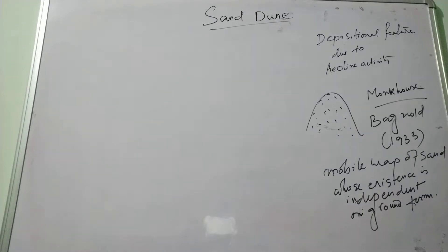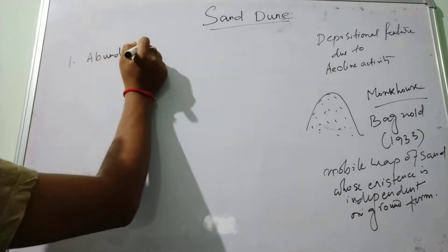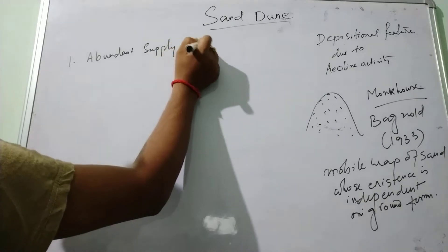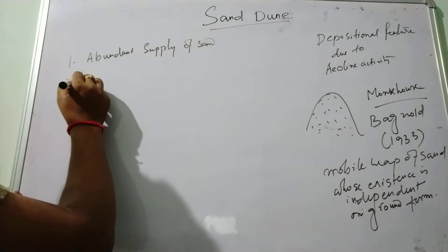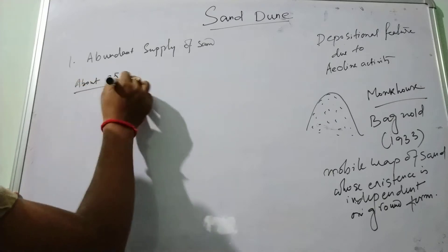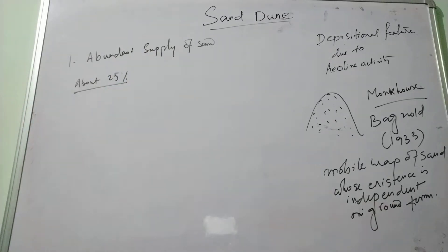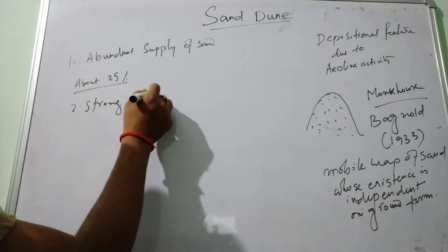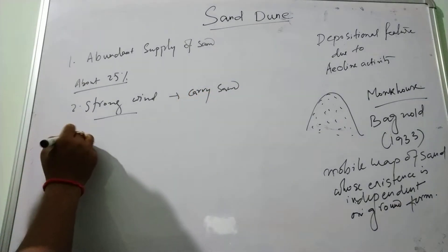There are several factors that influence the formation of sand dunes. The first is the abundant supply of sand. For the formation of sand dunes, an abundant supply of sand is important because approximately 25 percent of the desert area is covered with sand. The second factor is strong wind, which is helpful to carry the sand from one place to another.